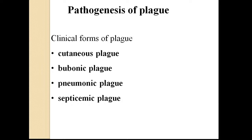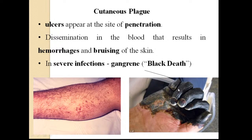In the pathogenesis of plague, we discuss several clinical forms. The first is cutaneous plague, the second is bubonic plague, the third is pneumonic plague, and the fourth is septicemic plague. The occurrence of each clinical form depends on the transmission route. Cutaneous plague develops after direct contact, pneumonic plague after inhalation, and septicemic plague after transmissible transmission via flea bites.